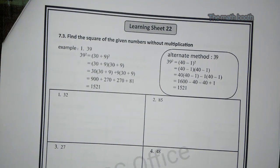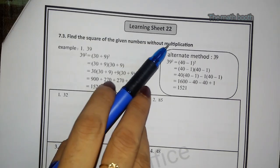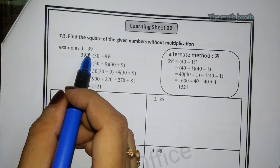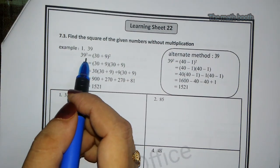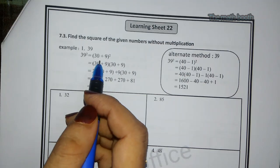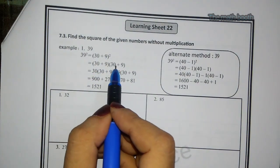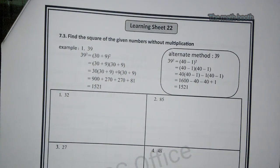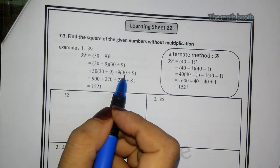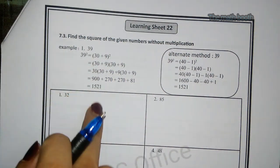Here it is given that find the square of the given number without multiplication. So how can we find the square of the given number without multiplication? Example 1, it is given 39 square. So here they have shown 39 is nothing but 30 plus 9, and here we have done (30 + 9) square. So 2 times (30 + 9)(30 + 9) we have to do. It is solved and shown here. So by seeing this same way we will solve the given problems.